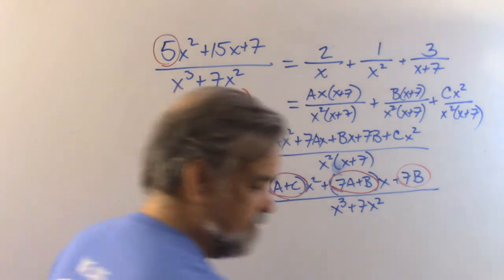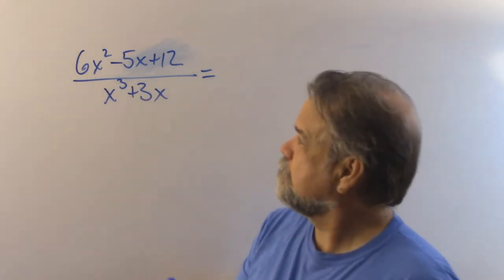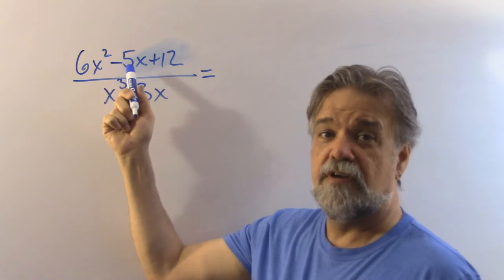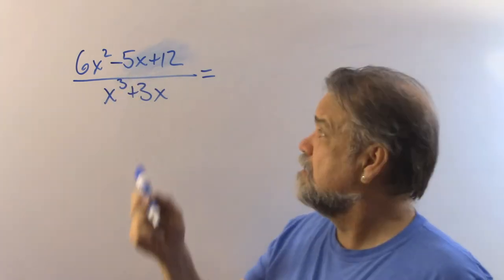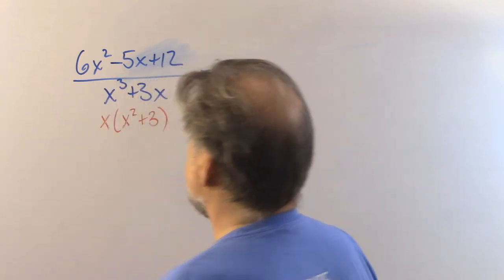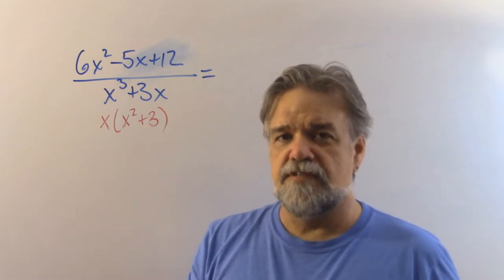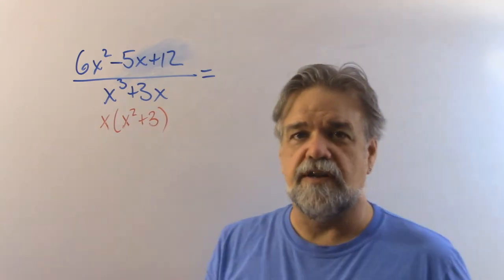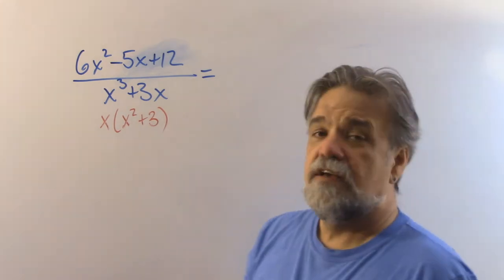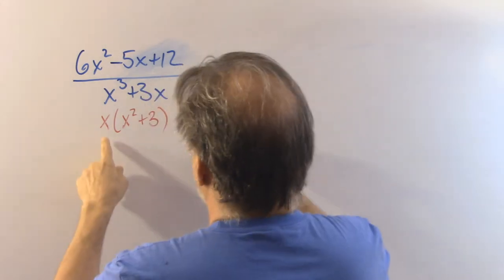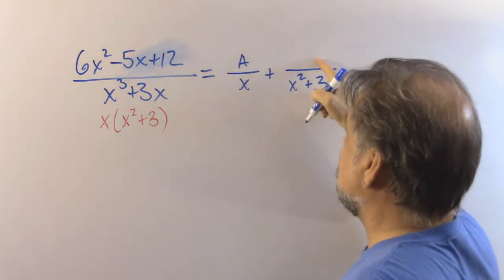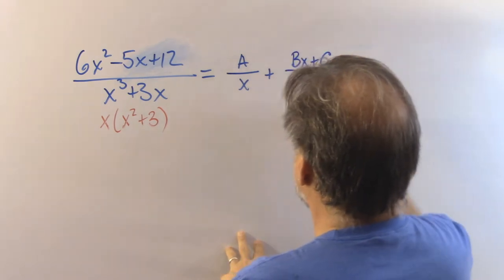Let's do another one. Now we have 6x squared minus 5x plus 12 over x cubed plus 3x. First step: factor the denominator. I can pull an x out and I'm left with x squared plus 3. This one's a little different because one of my factors is a quadratic that I can't reduce anymore. So I'll say something over x plus something over x squared plus 3, but I can't just put a b here — I have to put bx plus c, because the degree of the numerator has to be one less than the degree of that quadratic factor.